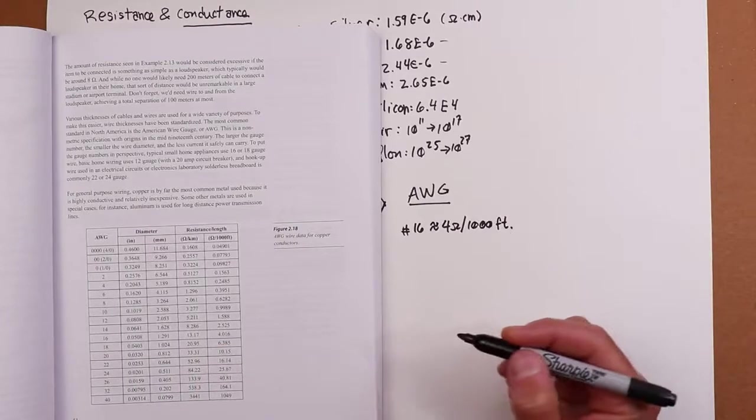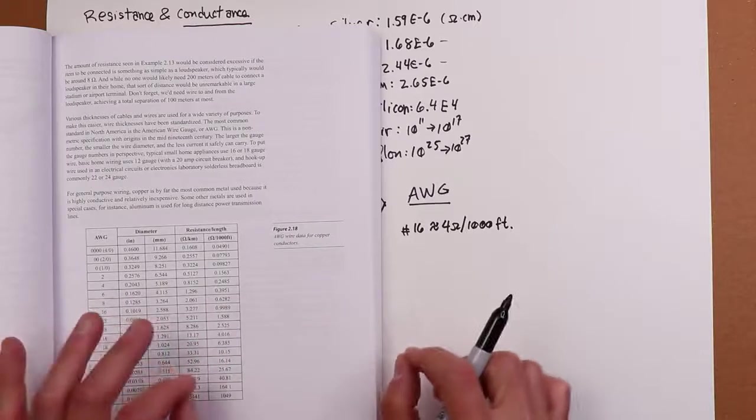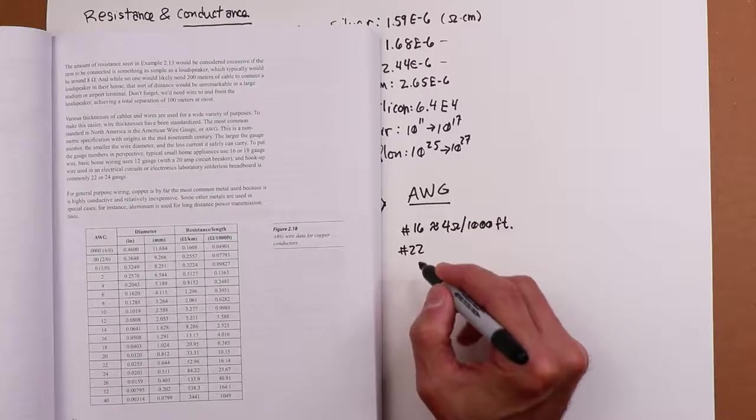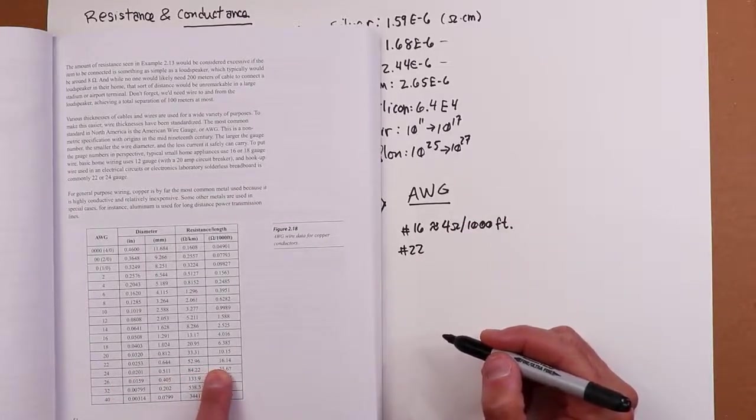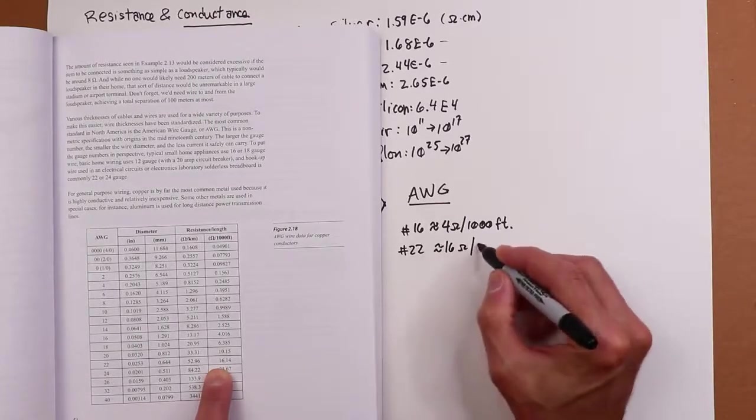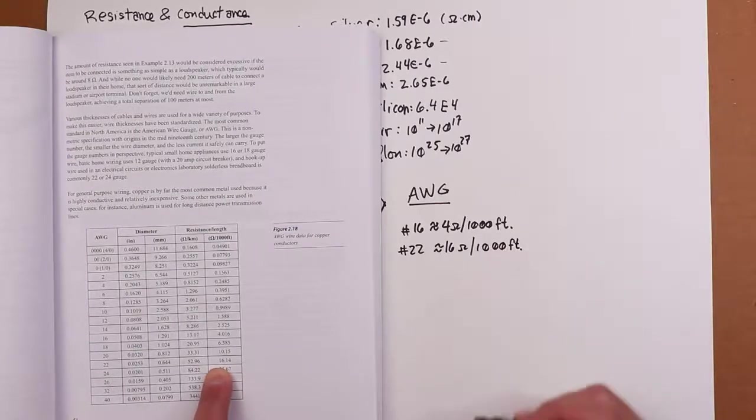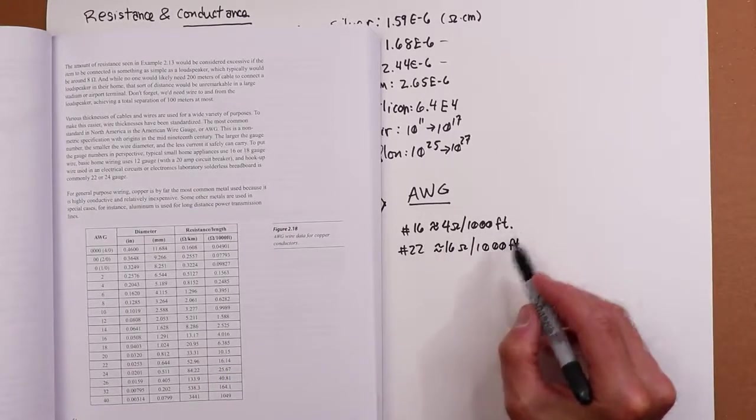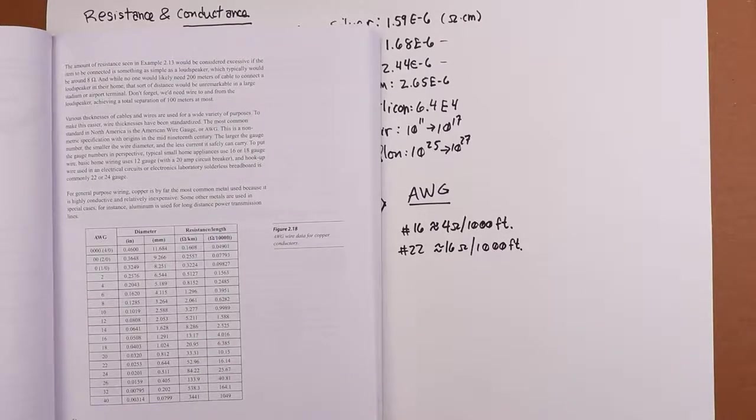And if we went to a finer gauge hookup wire, like the wire that you would use on, let's say, a protoboard to wire up something, which might be a number 22. Now, this is stranded wire, but the 22 would be solid. So in that case, we're looking at about 16 ohms, again, per 1,000 feet. So 4,000 feet of number 16 is going to have as much resistance, or as much conductance however you want to look at that, as 1,000 feet of number 22 cable.